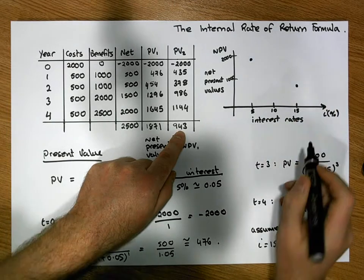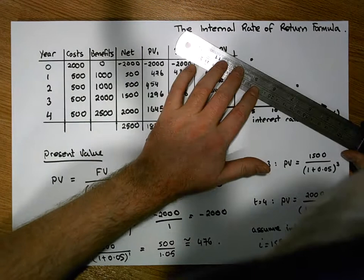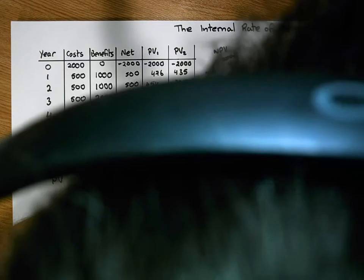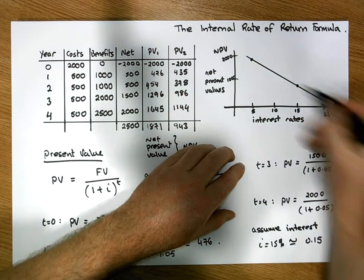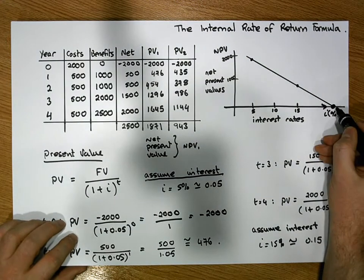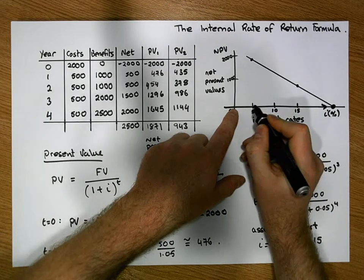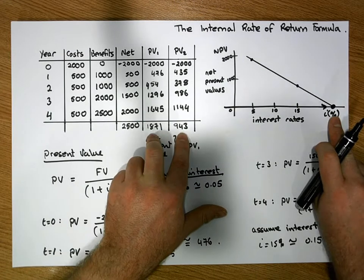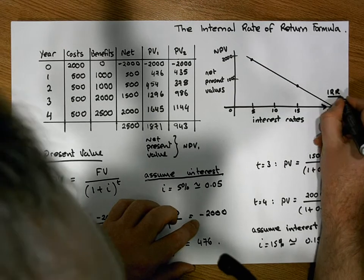We have two points, so we can draw a line through them. This line comes down and cuts the horizontal axis. This particular value — where the line cuts the horizontal axis — is known as the internal rate of return, because that's the interest rate that results in a net present value of zero, i.e., the break-even point. This is known as the IRR.